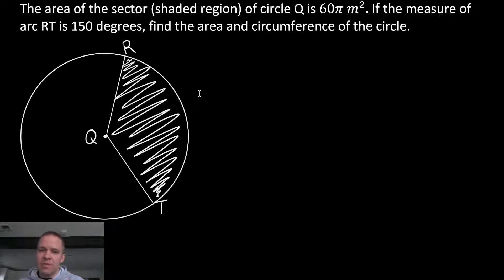We have the area of the sector of circle Q is 60π meters squared. So that shaded area there is 60π meters squared. If the measure of arc RT is 150 degrees, find the area and circumference of the circle.